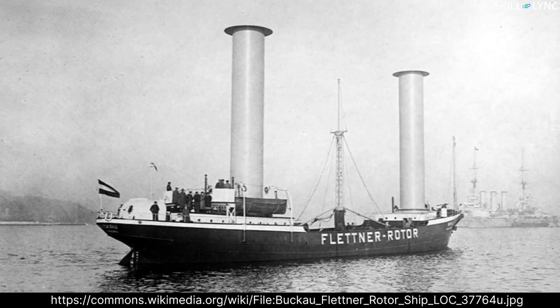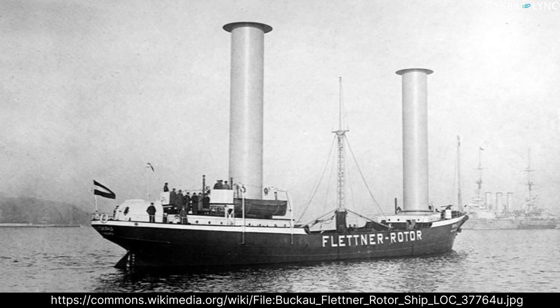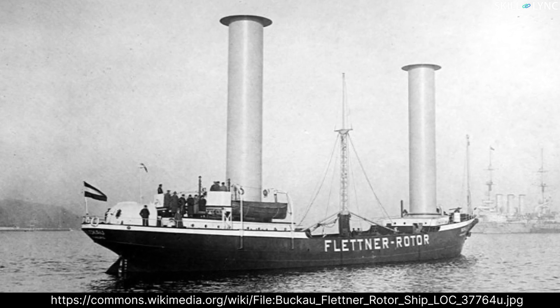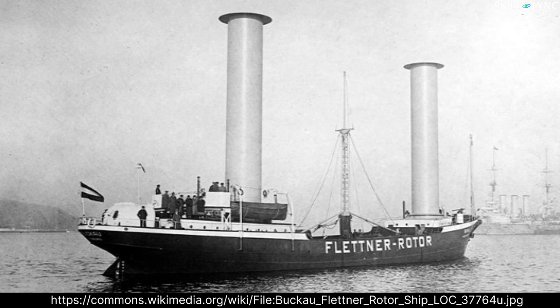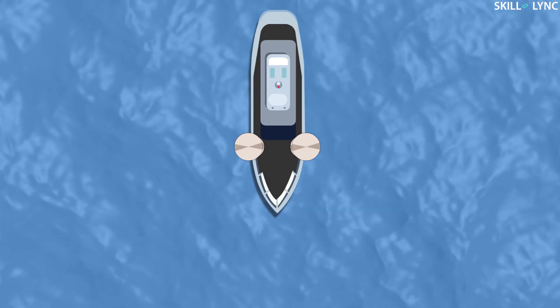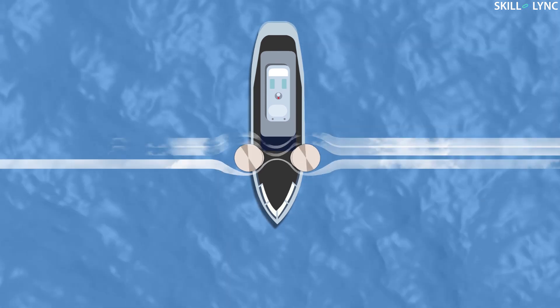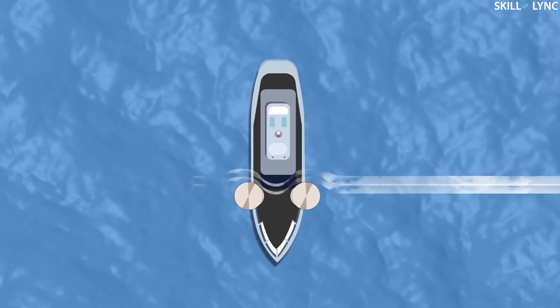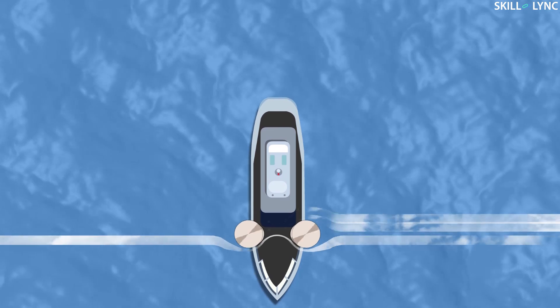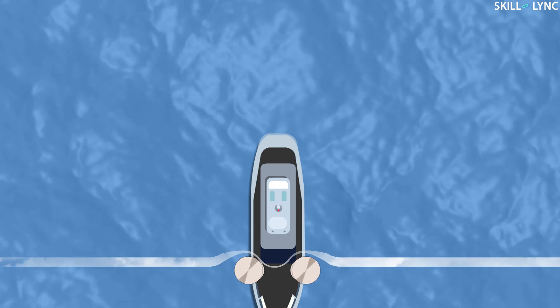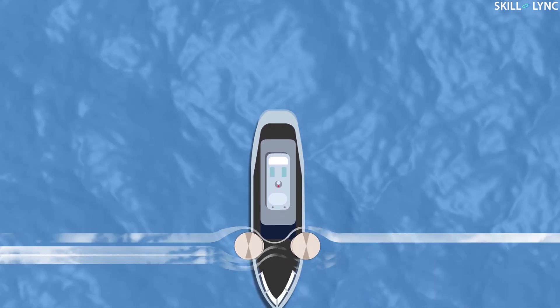The Magnus effect is used as a propulsion system in ships also. In 1925, a German scientist called Anton Flettner created the rotor ship. The rotor ships had one or more Flettner rotors connected to the engine of the ship. These rotors acted as sails for the ship. When the rotor rotated in the direction of the wind, the Magnus force caused the rotor to move forward along with the ship. To stop the ship or move backwards, the rotors just had to be rotated in the opposite direction.